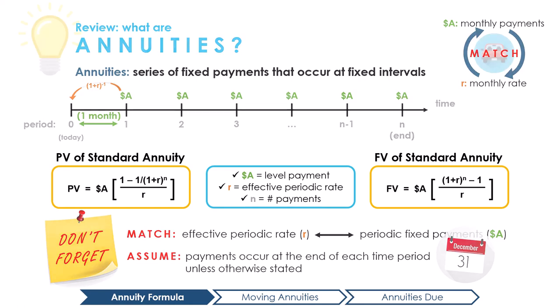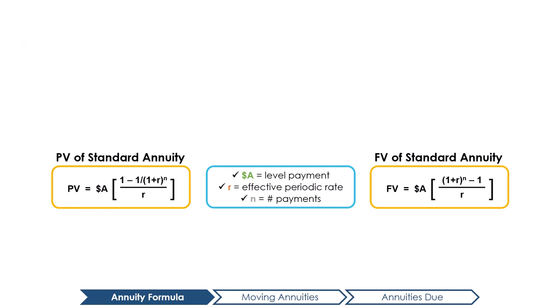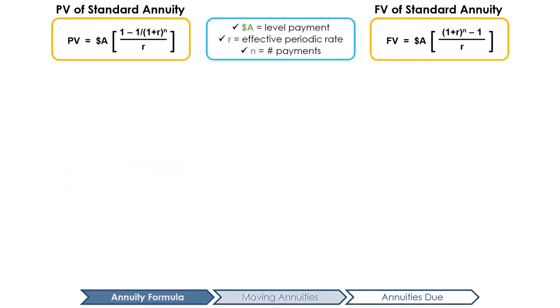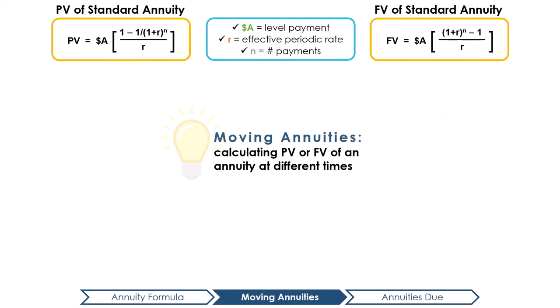Now, you may be asking yourself, how do you actually use these formulas? The first thing we can use the formulas for is to calculate moving annuities. A moving annuity is calculating the present value or future value of an annuity at different time periods.